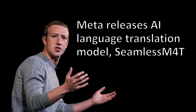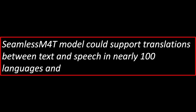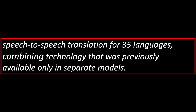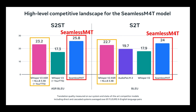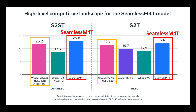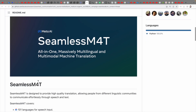Meta releases AI language translation model SeamlessM4T. The model could support translations between text and speech in nearly 100 languages and speech-to-speech translation for 35 languages, combining technology that was previously available only in separate models. If you thought WhisperV2 was the pinnacle of translation quality, SeamlessM4T is here to raise the bar — it outperforms WhisperV2 significantly. You can download SeamlessM4T on GitHub now.